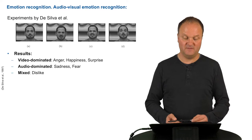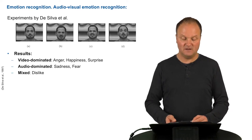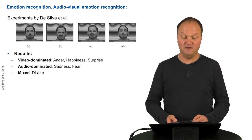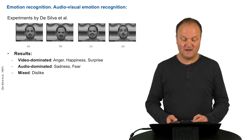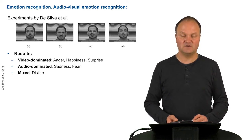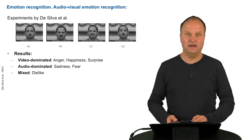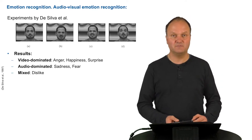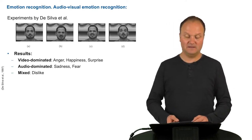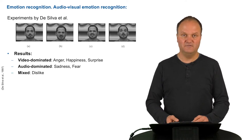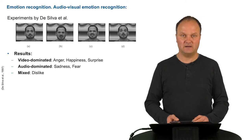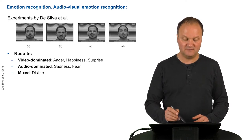Results from experiments by De Silva et al. show that there are video-dominated emotions, like anger, happiness, and surprise. There are others which can be better extracted from the audio signal, like sadness and fear. And there are some which are represented in both types of signals, like dislike. So apparently it is good to combine video information with audio information in order to classify emotions.